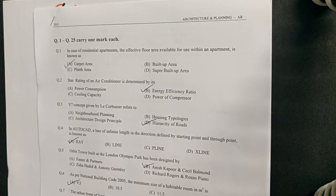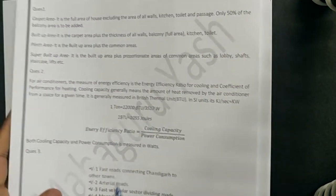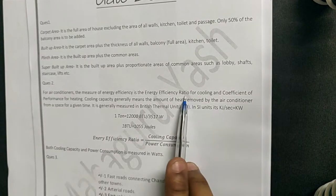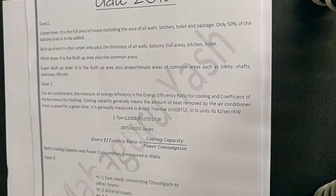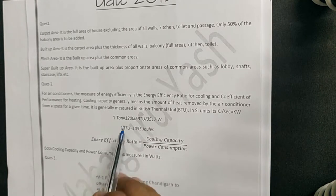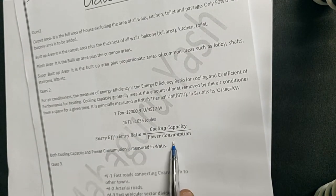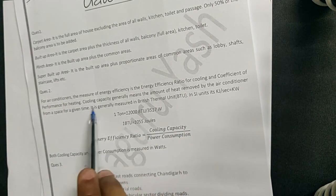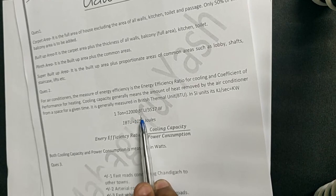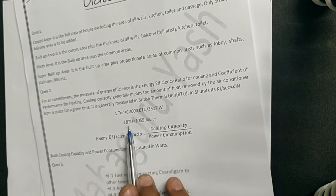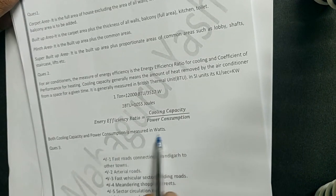The next question: the star rating of an air conditioner is determined by its — the answer is Energy Efficiency Ratio. For air conditioners, EER measures efficiency for cooling and coefficient of performance is used for heating. Cooling capacity is the amount of heat removed by the AC from a space in a given time. The EER is cooling capacity divided by power consumption. Cooling capacity is generally measured in BTUs — 1 ton equals 12,000 BTUs or 3,517 watts, and 1 BTU equals 1,055 joules.